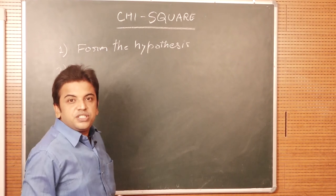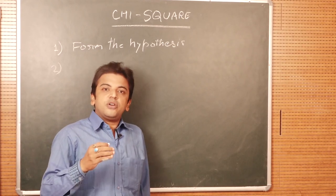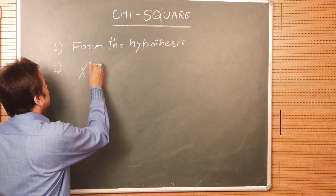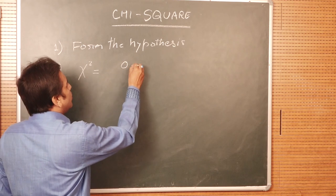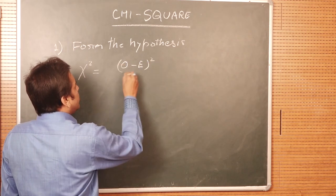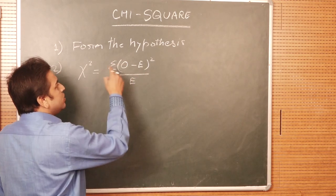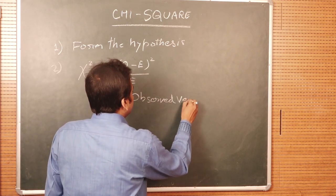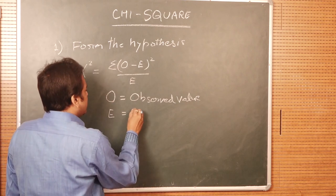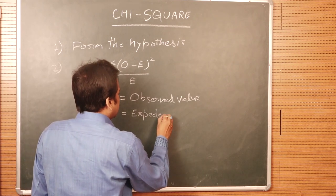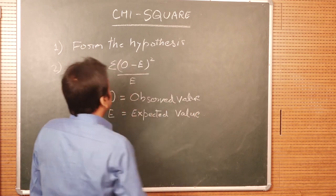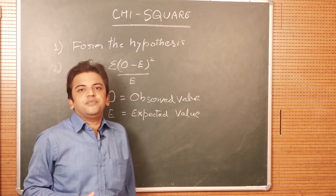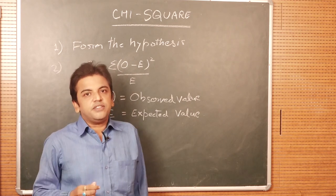Second, on the basis of the hypothesis, we have got the observed value. From the observed value, we are going to find out the expected value, and we put it into the formula of Chi-square: Chi-square equals the summation of (O minus E) whole square upon E, where O is the observed value and E is the expected value. The observed value is always given in the problem; you have to calculate the expected value.